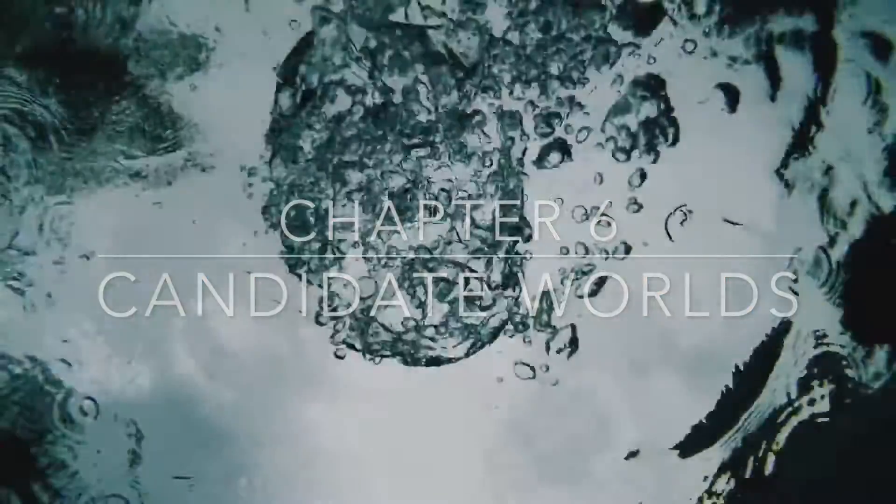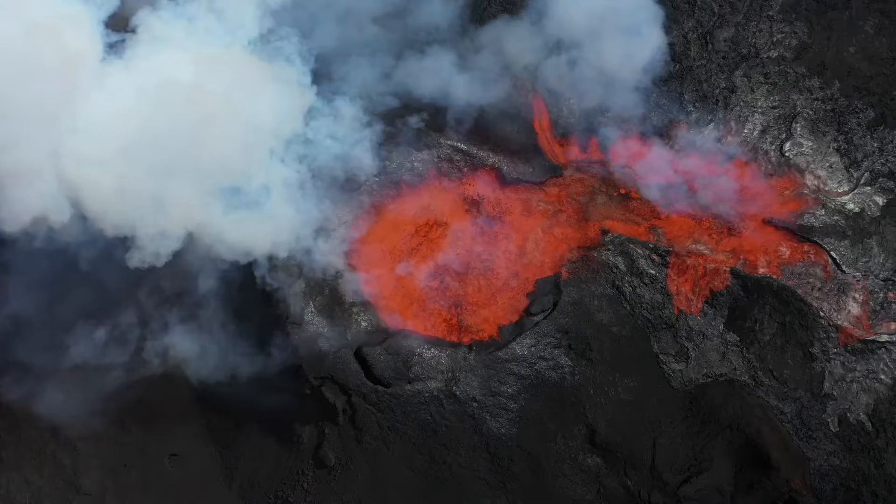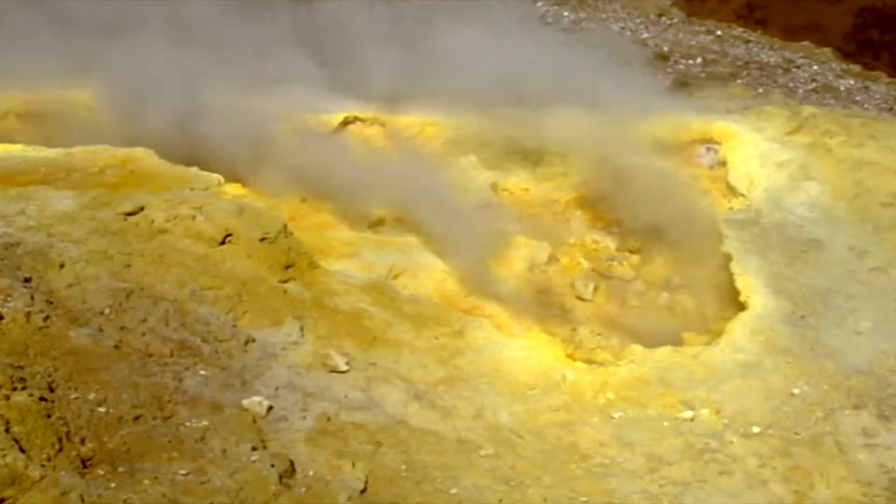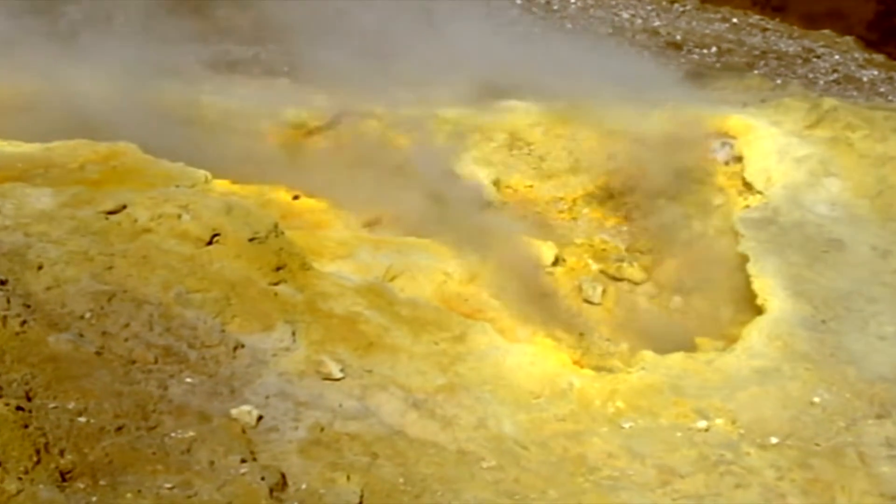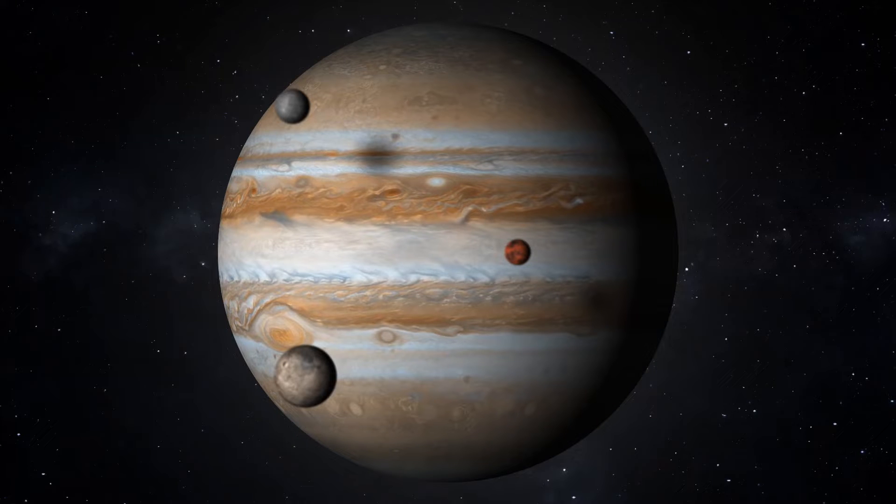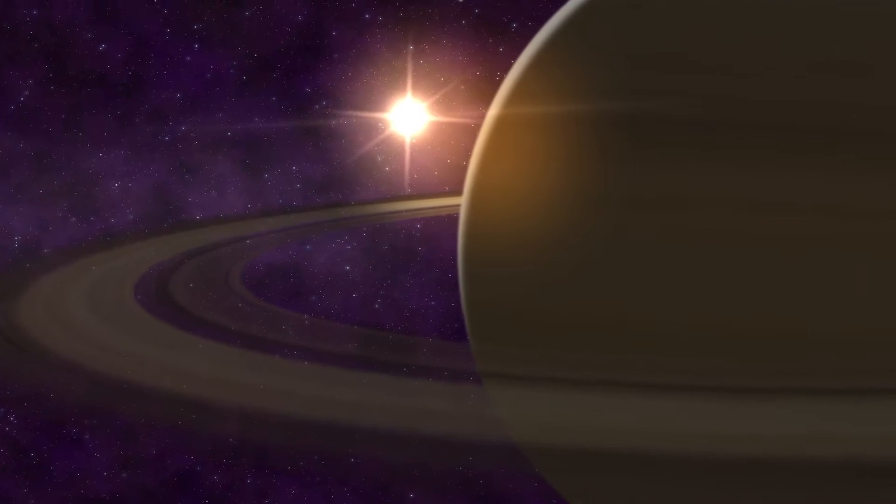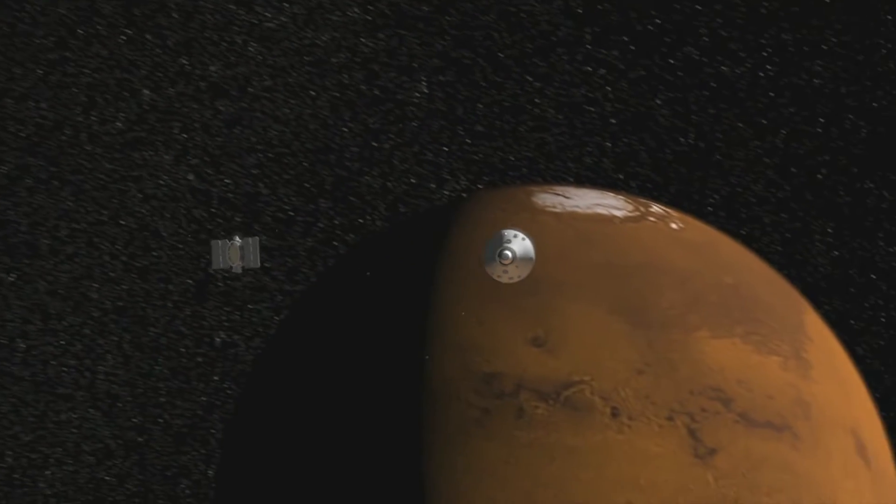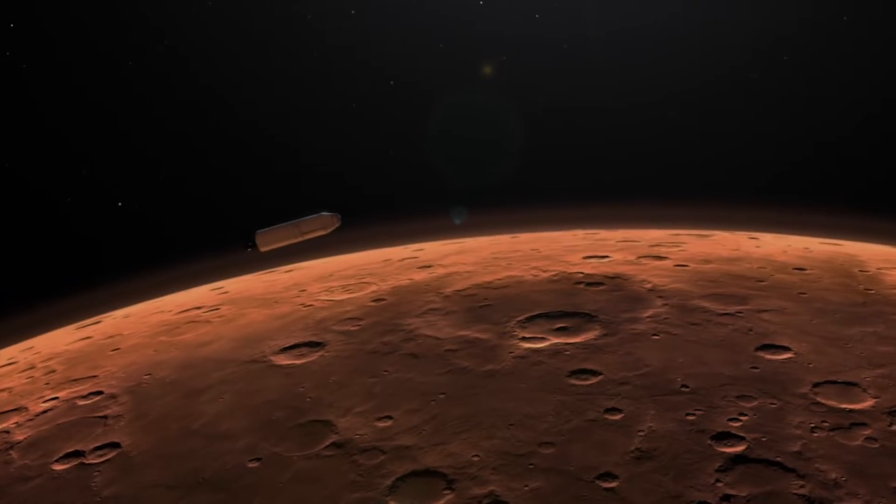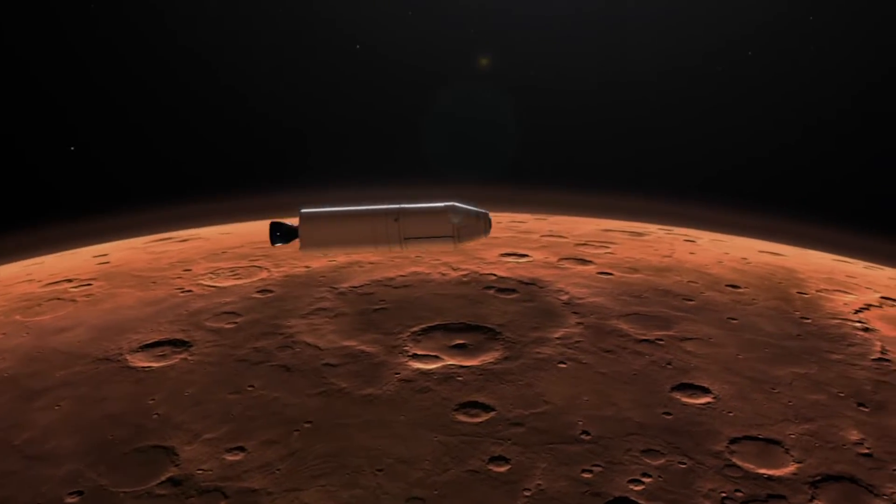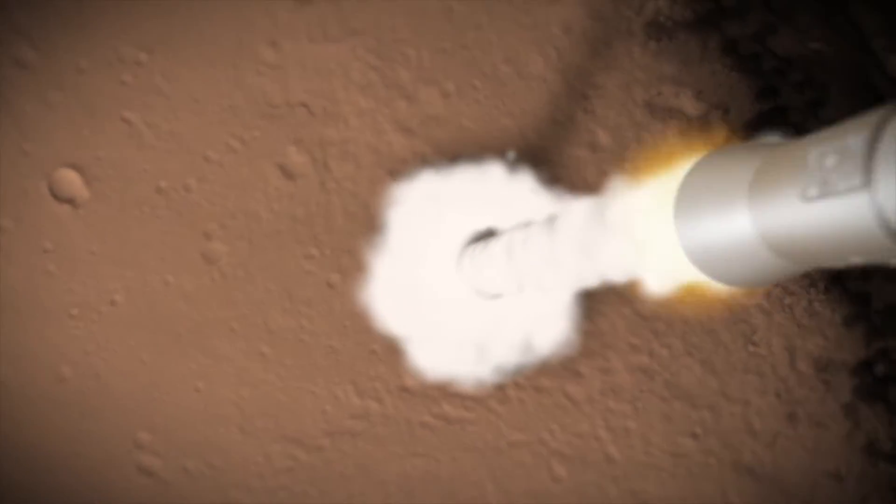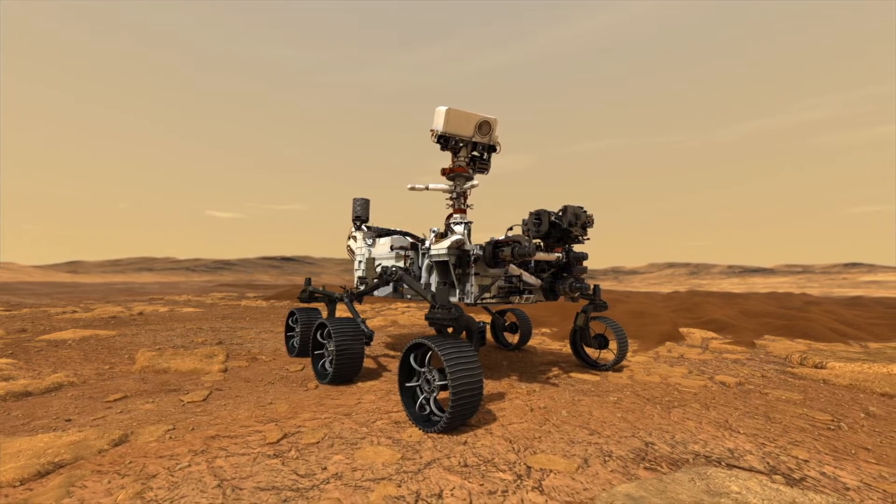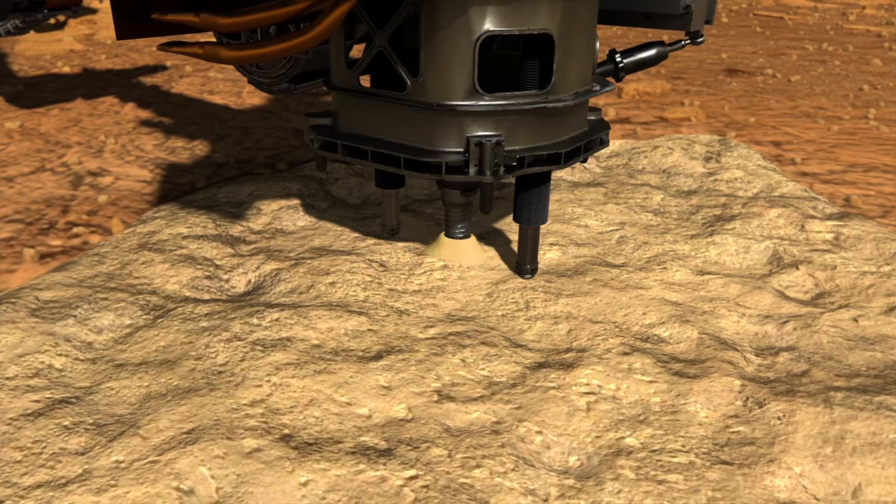What we've learned so far about liquid water, volcanism and tough microbes gives us a realistic list of places to look in our solar system. It's important to have a short list because it will be hundreds of years before we've seriously studied every place in the solar system. Space missions take decades of planning and are extremely expensive, so we have to target the most likely places first.